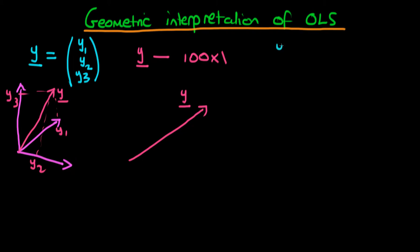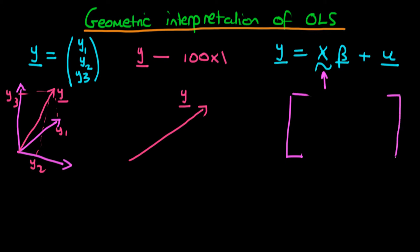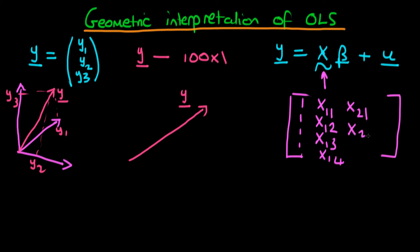If we think about our regression model — y equals x times beta plus u — we know x is our matrix of independent variables, and we can think about each of the respective columns as representing the particular space spanned by that independent variable. Typically in OLS, the first column just contains ones because we're having a constant in our model. The second column might represent the values of variable x1, with x11 as its first value for the first person, the second value for the second person, and so on.